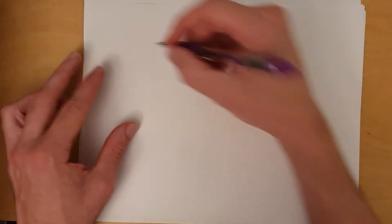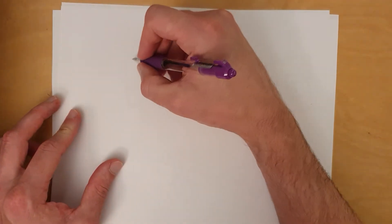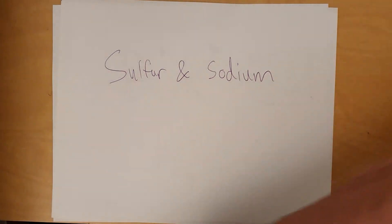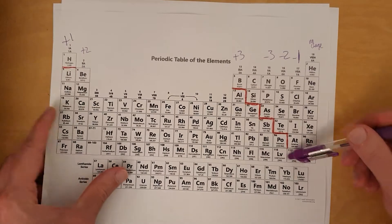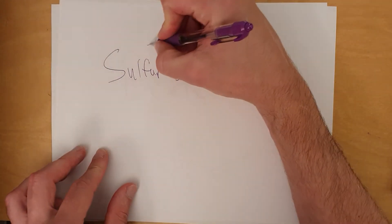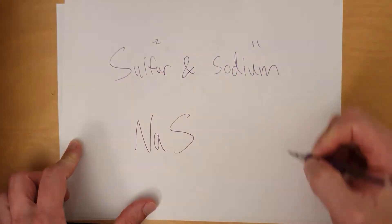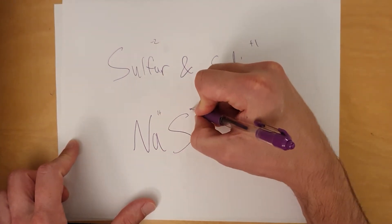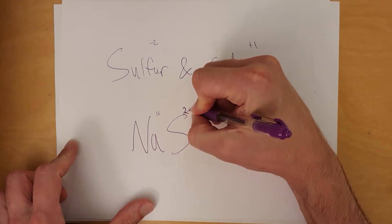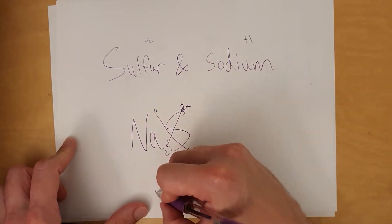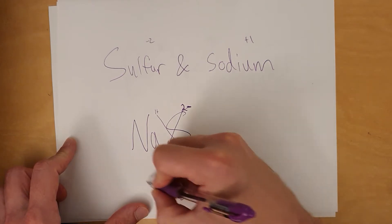Let's look at some others. What if we wanted to have a formula involving sulfur and sodium? Looking at the periodic table, sulfur is in the minus two column, sodium is in the plus one column. So put the positive one first: Na. Negative one last: S. Sodium is a one-plus charge, sulfur is a two-minus charge. Ignore the signs — put the two down here for sulfur, put the one down here for sodium. So it becomes Na₂S. Remember, don't write the one.